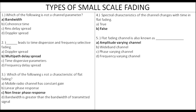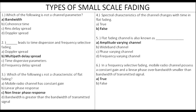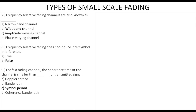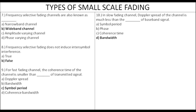In frequency selective fading, it is constant gain with linear phase over a smaller band of the transmitted signal. Frequency selective fading is a wideband channel, whereas flat fading is a narrowband channel. Frequency selective fading induces intersymbol interference. For flat fading, the bandwidth of the signal is less than the bandwidth of the channel.